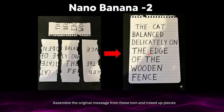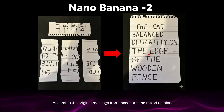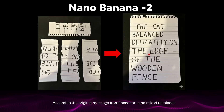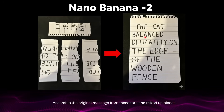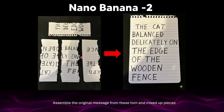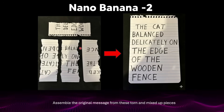Take a look at this next example — I truly believe it's one of the craziest things existing online right now. Someone took pieces of ripped-up paper, wrote something on them, and Nano Banana was able to reconstruct those scrambled, jumbled pieces back into an original image. It clearly says: 'The cat balanced delicately on the edge of the wooden fence.' I don't know how on earth it did this — converting ripped notes back into a coherent original image.